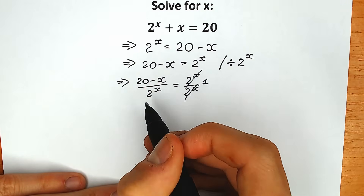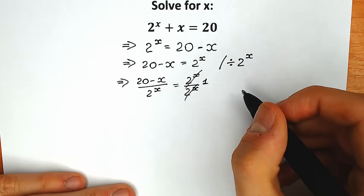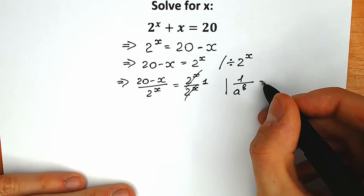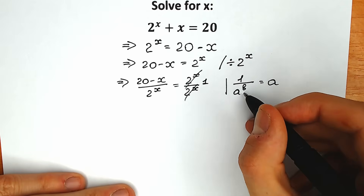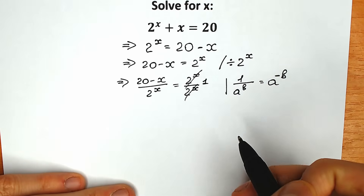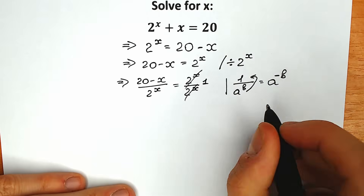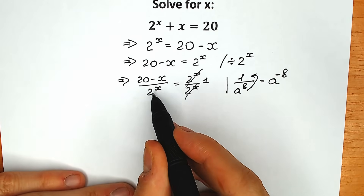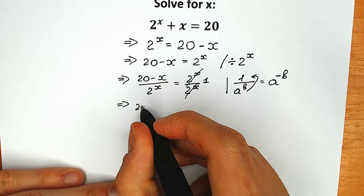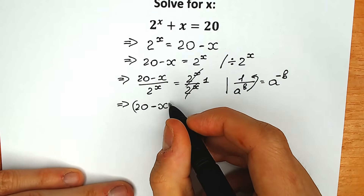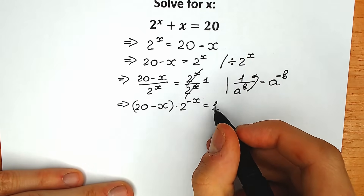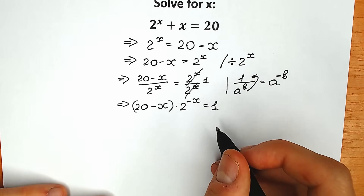Let's look closely at the left side — we have 2 to the power x in the denominator. We need to know an important property: whenever we have a to the power b in the denominator and want to bring it to the numerator, we put a minus in the power. So we write 2 to the power minus x in the numerator. As a result, we have (20 minus x) times 2 to the power minus x equal to 1.